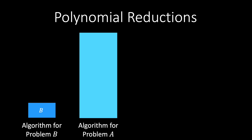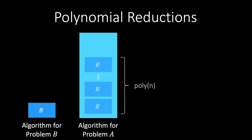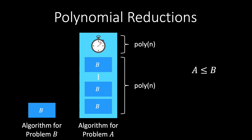If we can solve problem A using a polynomial number of calls to algorithm B and polynomial additional time, then problem A is at most as difficult as problem B. We say that A reduces to B, which is written as A ≤ B.